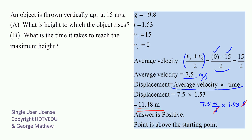Is the displacement positive or negative? Our average velocity is positive, so our displacement is going to be positive. Displacement is average velocity times time: 7.5 times 1.53. Time can never be negative, so it is 11.48 meters — a positive answer. Our point is above the starting point: 11.48 meters above the starting point.